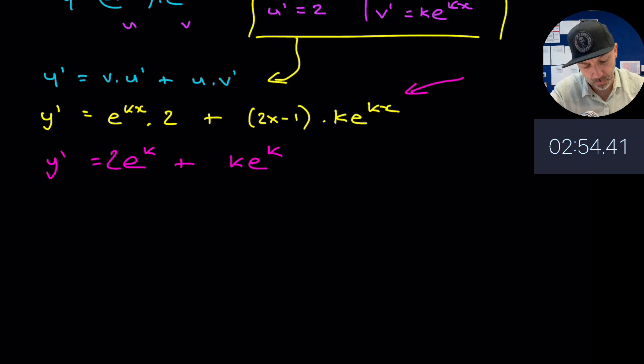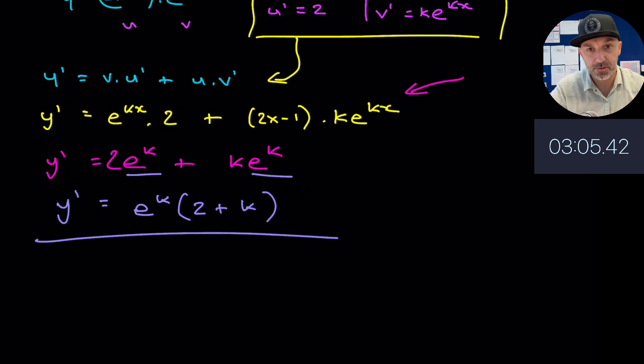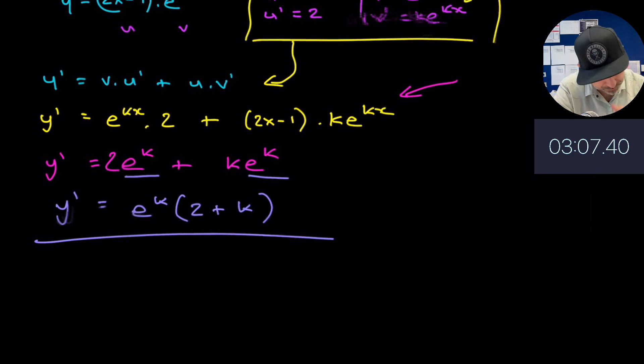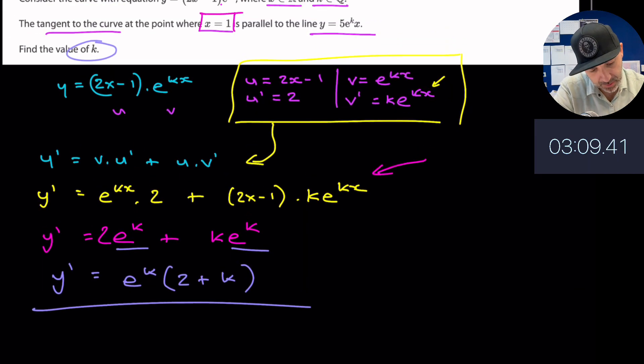Now we can see that there is a common factor in both of these so that can come out, so that'd be e to the k times (2 + k) equals dy/dx. So that's my gradient function.